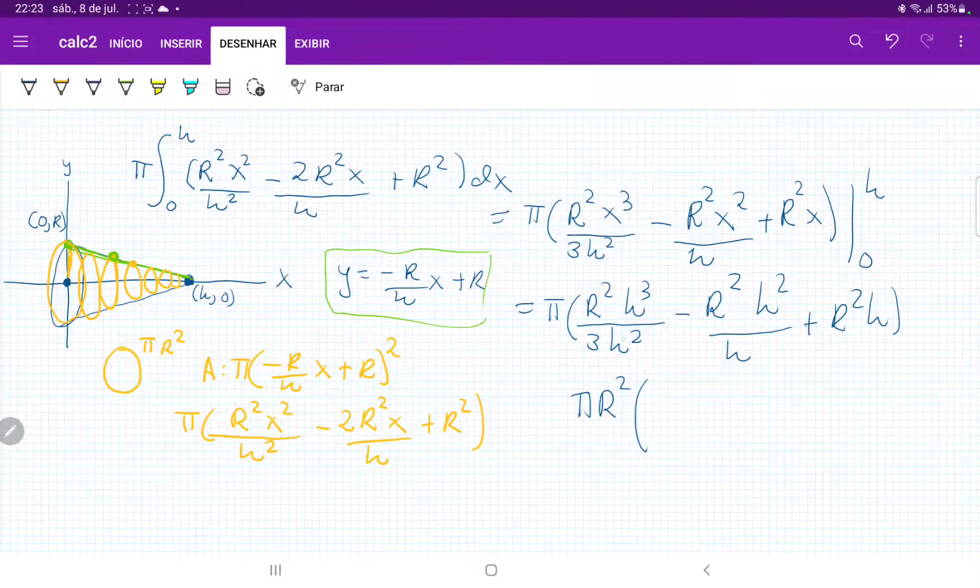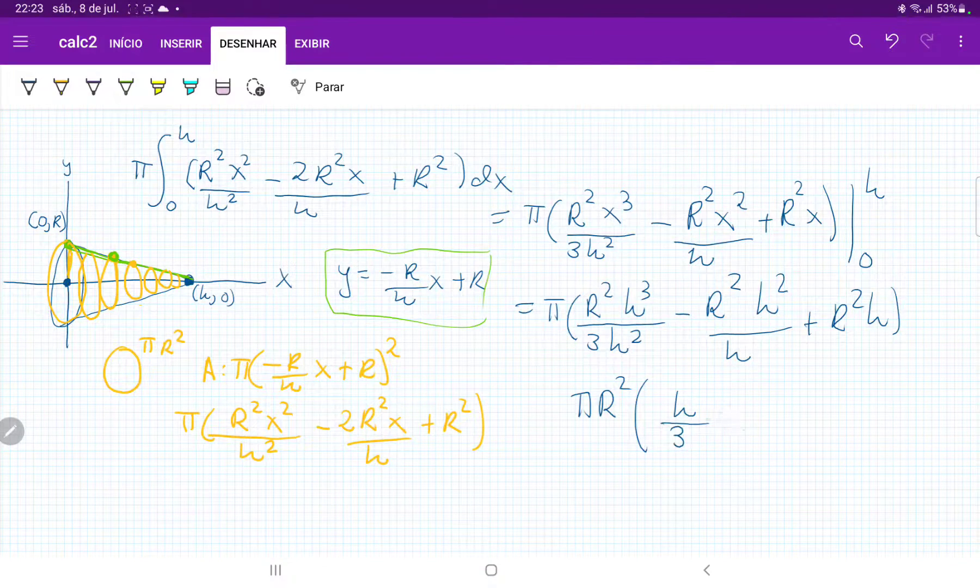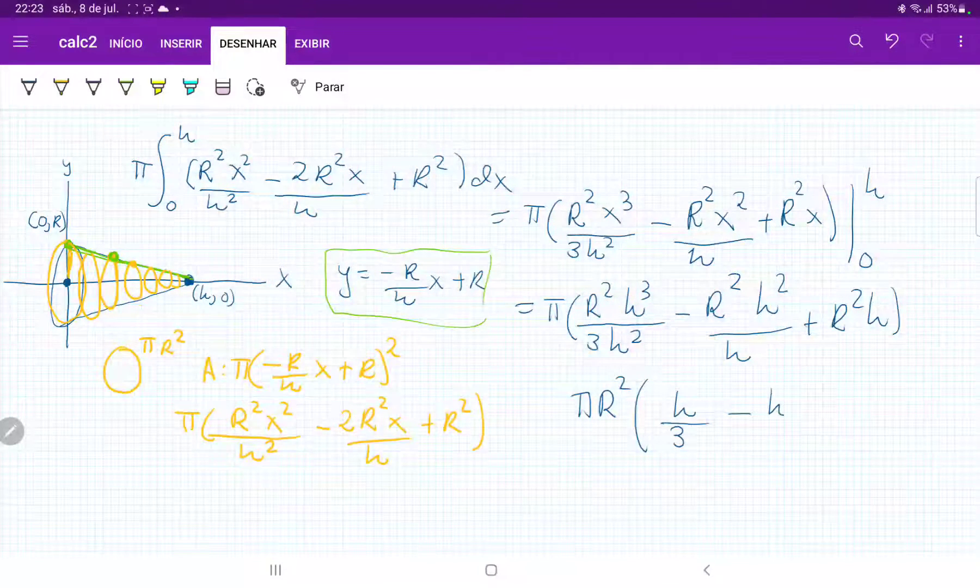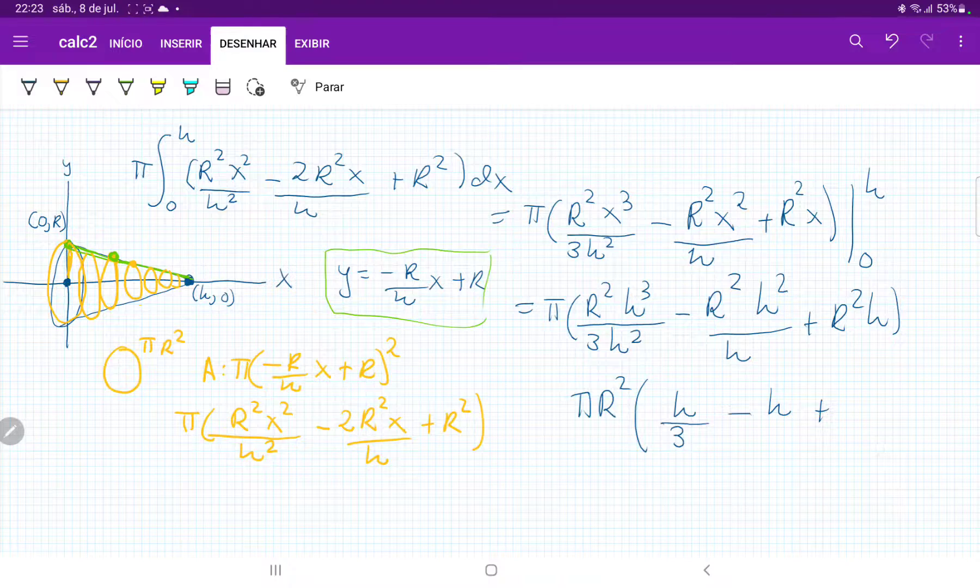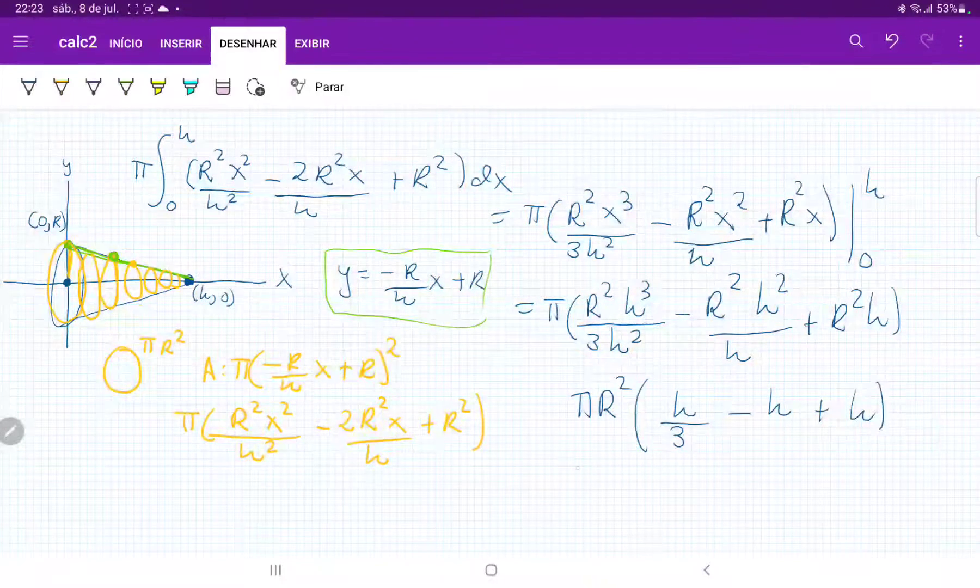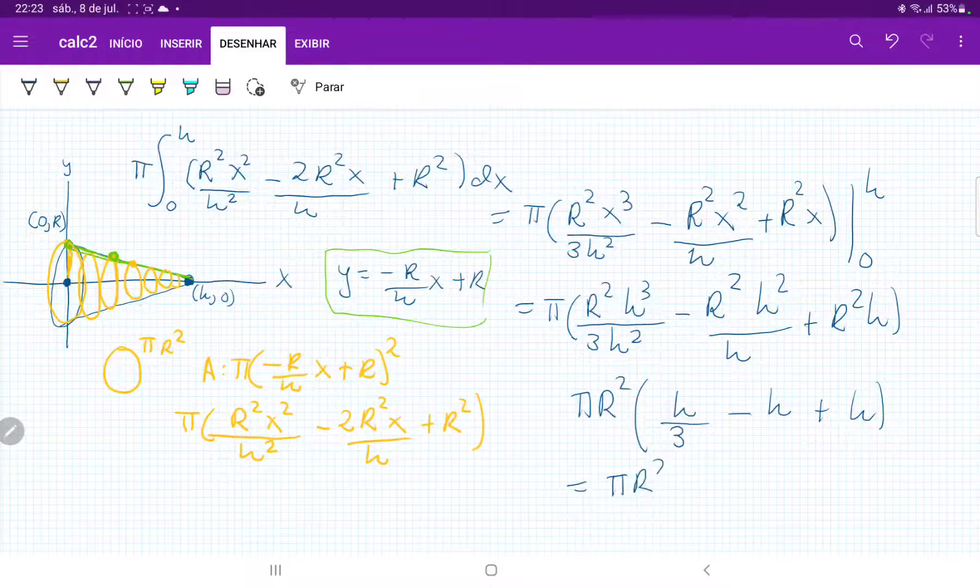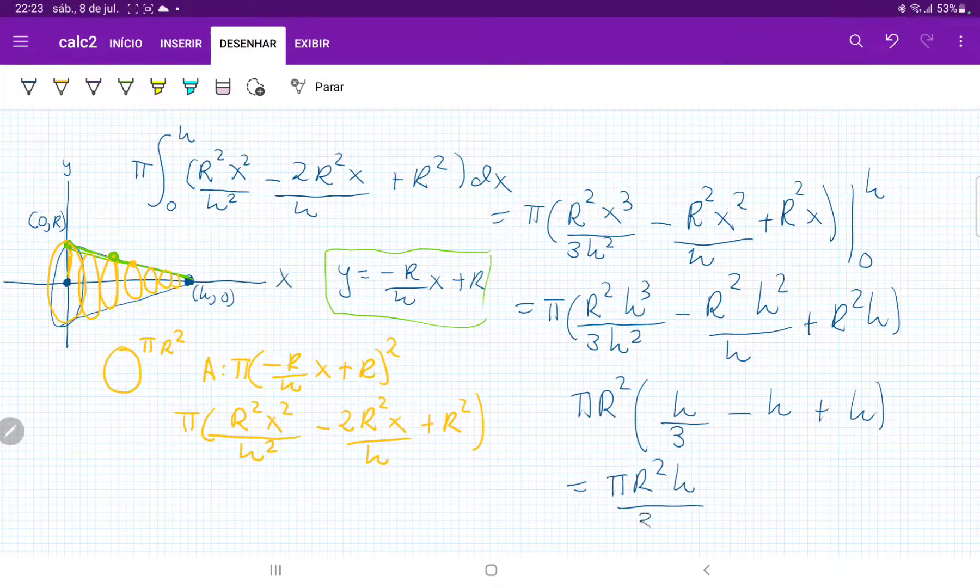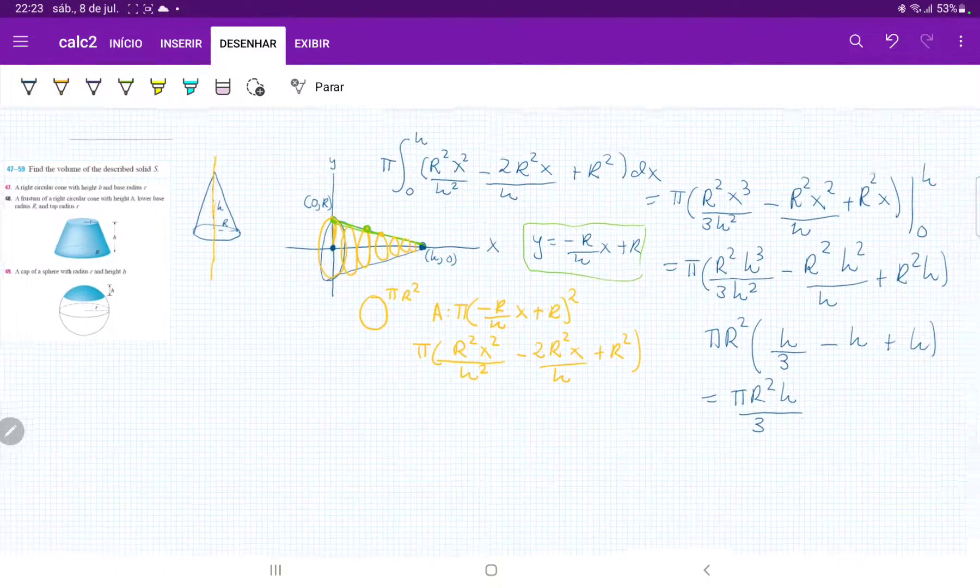this h cubed is going to cancel with the h squared, so we're going to have h over 3 minus h plus h. So this is going to end up being pi r squared h over 3, and that is what gives us the volume of our cone.